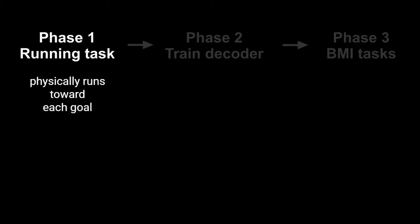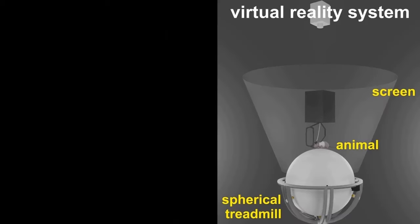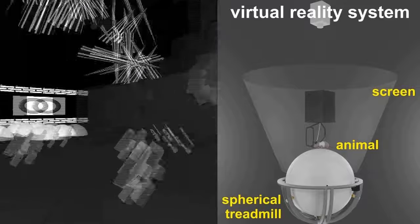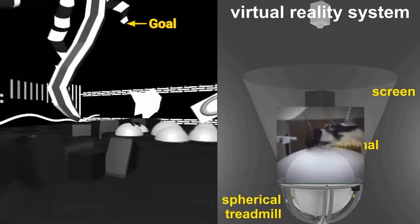The rat runs in a 360-degree immersive virtual reality environment. They can freely rotate their bodies to orient themselves in a one meter by one meter virtual arena. As it runs, the rotation of the spherical treadmill is converted into a visual update on the screen.